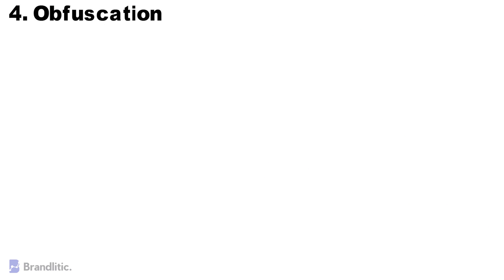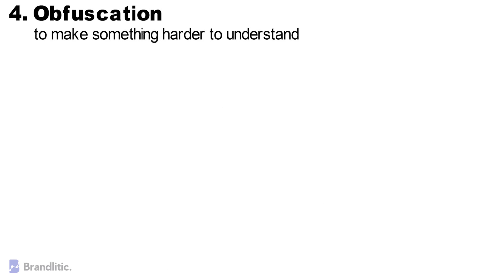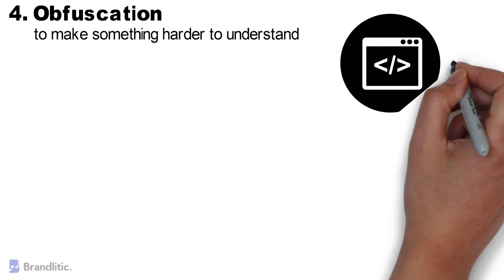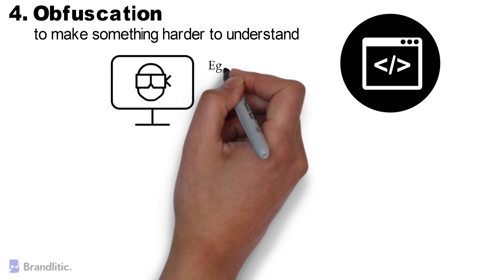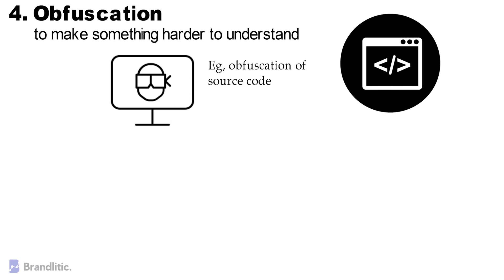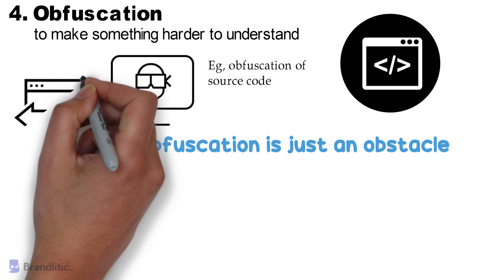Obfuscation. The purpose of obfuscation is to make something harder to understand, usually for the purpose of making it more difficult to attack or to copy. One application of this is obfuscation of source code, so that it is harder to replicate a given product if it is reverse engineered. It is important to note that obfuscation is not a strong control like properly employed encryption methods, but rather an obstacle — like encoding — and can often be reversed by using the same technique that obfuscated it.